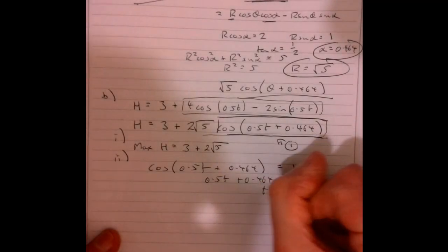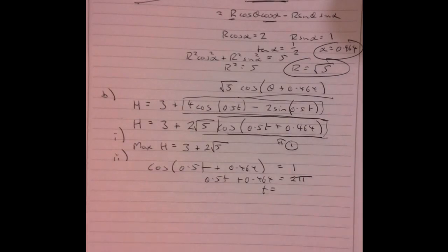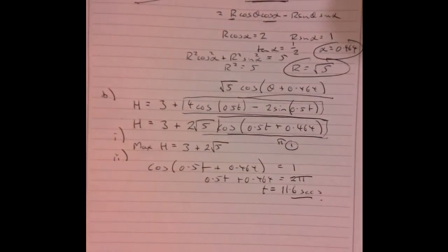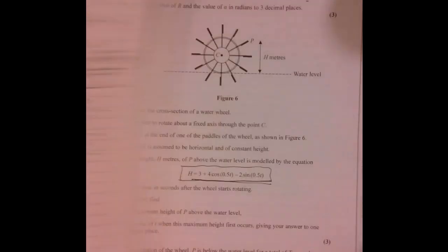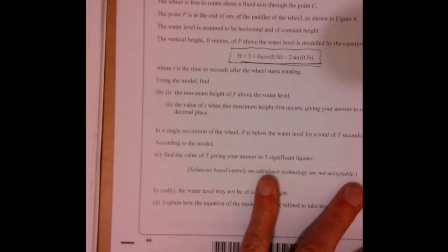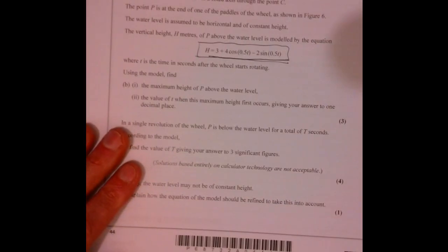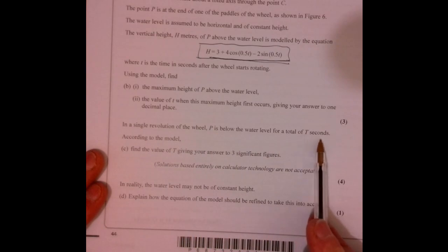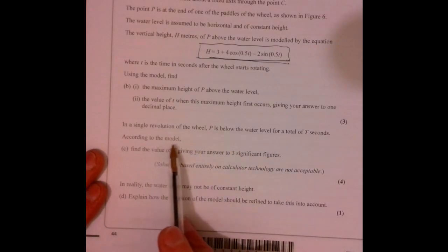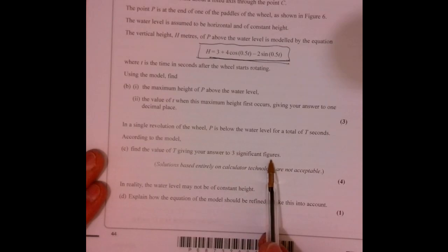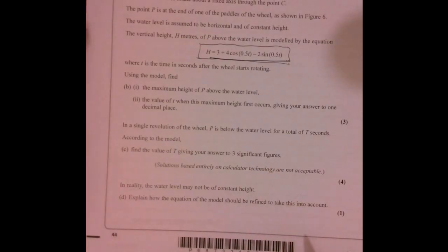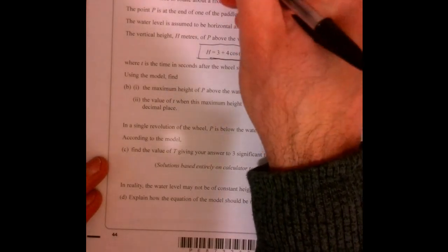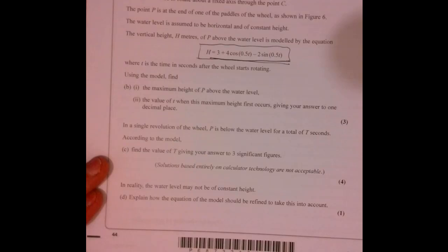And if you just work that through, that gives you T equals 11.6 seconds. Now with the next bit of the question. What's it actually asking us there? So in a single revolution of the wheel, P is above the water for a total of T seconds according to the model. Find a value of T giving your answer to three significant figures. Well, when I was thinking about this, I was just thinking to myself, well, when does it go below the water? And then when does it come back up above the water? Remember, we're looking for when it's below.